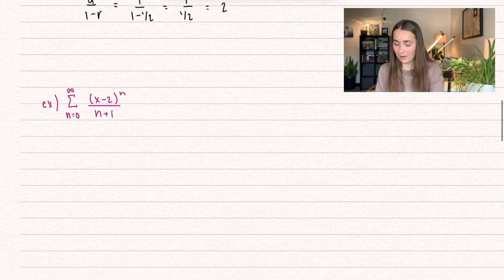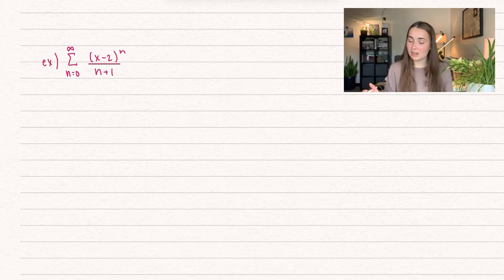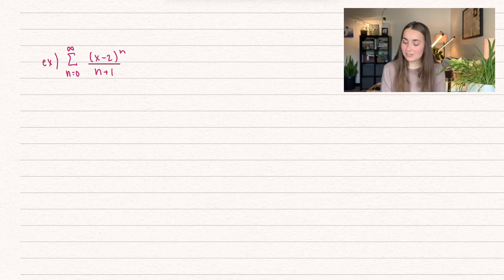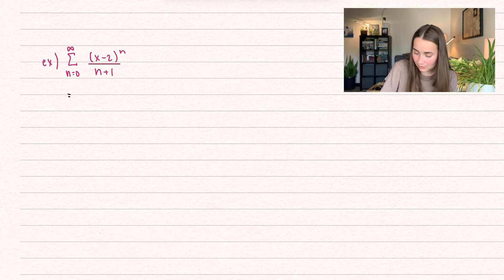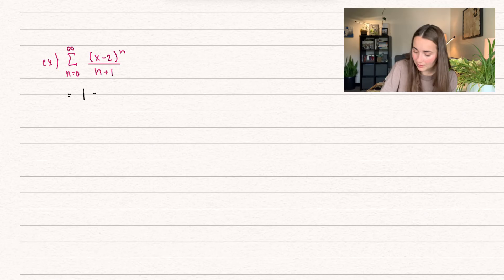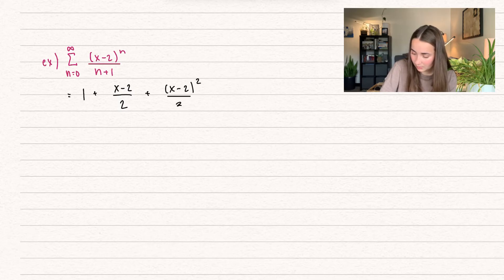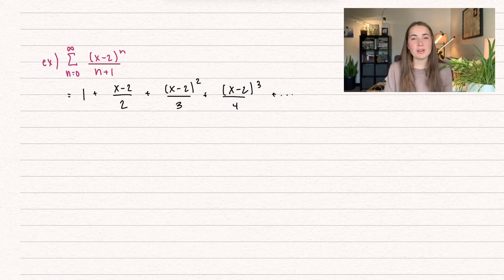Here's another one: summation n equals 0 to infinity of x minus 2 to the power of n divided by n plus 1. Let's go ahead and plug in n values. Plugging in n equals 0, we get 1 over 1, which is just 1. For n equals 1, we get x minus 2 divided by 2. Then x minus 2 squared divided by 3, x minus 2 to the power of 3 divided by 4, and this goes on forever.